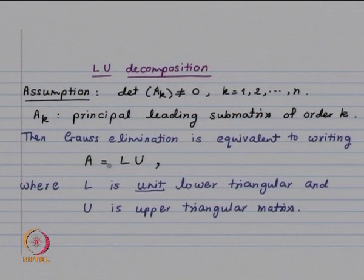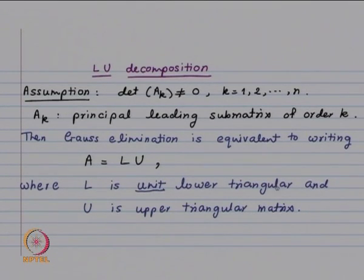This condition is stronger than invertibility. Invertibility means that the determinant of A is not equal to 0. Now we want not only the determinant of A to be non-zero, but also the determinant of Ak to be non-zero. The Gauss elimination method is equivalent to writing A as L times U, where L is unit lower triangular and U is upper triangular.